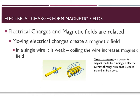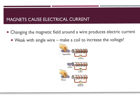Moving electrical charges make a magnetic field. If you take your right hand and point it in the direction that the charges flow, your fingers show the direction of the magnetic field — the way your fingers wrap around that current. With a single wire the magnetic field is really weak, but if you coil the wire up you can make that magnetic field really strong by concentrating it. This is how electromagnets work: running current through lots of coils of wire with an iron core makes a really strong magnet.